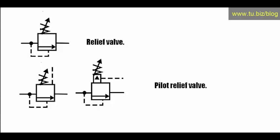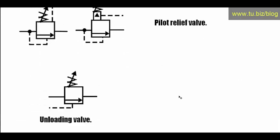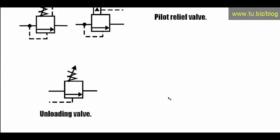Next we have an unloading valve. This valve is drawn very similarly to the relief valve, but the line to open the valve does not come from the same pressure port of the valve — it comes from a different source elsewhere in the hydraulic circuit to open the valve.